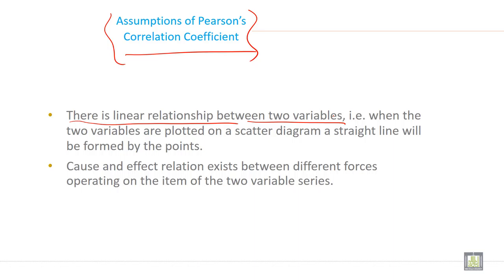This is the assumption: only a linear relationship will be there, then you can calculate the Pearson coefficient of correlation. This is the first assumption. The second assumption is that a cause and effect relation exists between different forces operating on the items of the two variables, or you can say more than two variables.